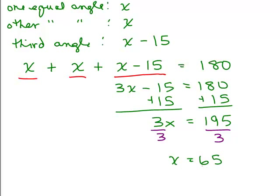Now remember that it's not in degrees yet, but our final answer must be in degrees. So let's go back up. x, what did that stand for? It stood for the measure of one of the equal angles. So one of the equal angles is 65, and so is the other one, right? And the third one would then be 15 degrees less than that. So 15 from 65 would be 50 degrees.